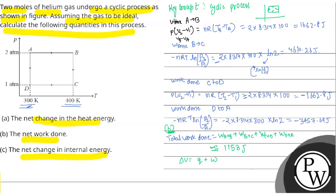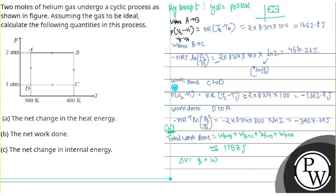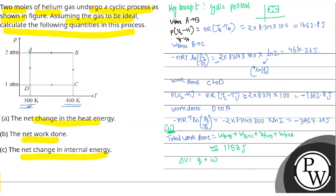Since cyclic process initial point and final point is the same, the change in internal energy delta U is zero. So change in internal energy will be zero. So here Q equals negative of W, which is minus 1153 joules. Net work done is 1153 joules, net change in the heat energy is minus 1153 joules.